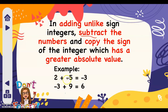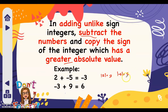Example: two plus negative five. We just subtract: five minus two, that is three. In terms of the sign, copy the sign of the integer which has a greater absolute value. The absolute value of two is two, and the absolute value of negative five is five. Five is greater than two, therefore we copy the sign of five, which is negative — that is why the answer is negative three.